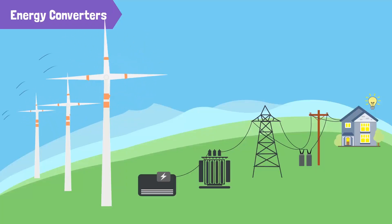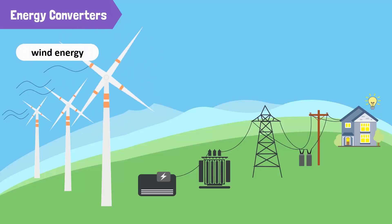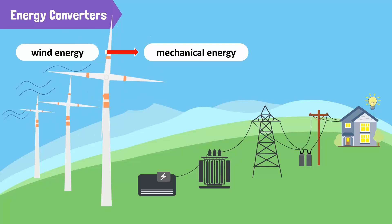A windmill is an energy converter. It runs with the help of wind energy. Do you know what forms this is converted into? A windmill converts wind energy into mechanical energy and then to electrical energy.